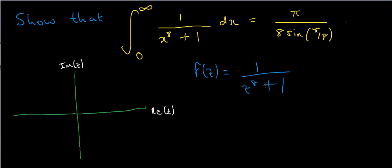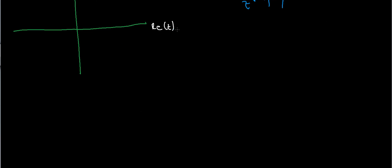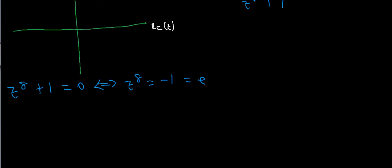This function is holomorphic on the whole complex plane apart from the poles, which occur at the zeros of z to the 8 plus 1. To find where the poles are, let's find the zeros by solving z to the 8 plus 1 equals 0, which is the same as z to the 8 equals minus 1. And minus 1 is the same as e to the π i.